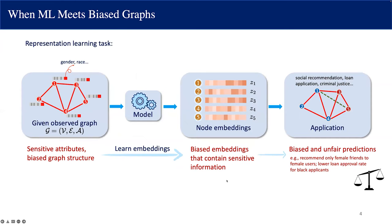Let's take a look at a typical pipeline for applying machine learning methods on graph data. We are given an observed graph where each node is associated with some potentially sensitive attributes. We apply a machine learning model to learn the node embeddings to represent each node. These node embeddings are applied to downstream tasks such as social recommendation, loan application, or criminal justice. However, because the connections in the observed graph are influenced by the sensitive attributes, the node embeddings will capture such sensitive information and lead to biased, unfair predictions.